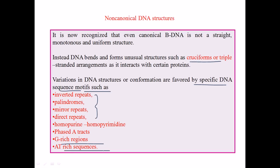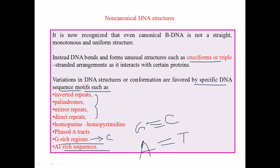If we have G-rich sequences, Chargaff's rule tells us we must have C on the opposite side. G pairs with C via three hydrogen bonds, making that pairing very strong, so higher GC content means a higher melting temperature is needed to separate the strands. If a DNA is made up with more AT-rich sequences, A and T pair with only two hydrogen bonds, making it easier to bend the DNA from those AT-rich regions.